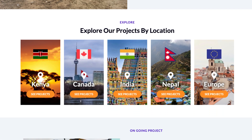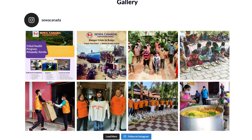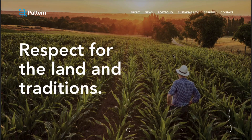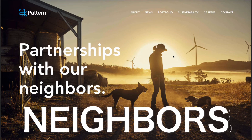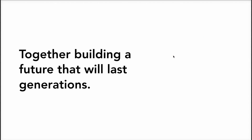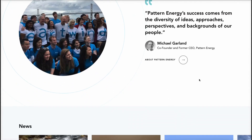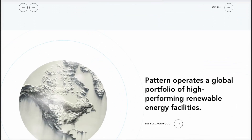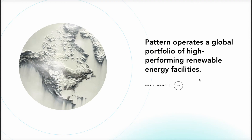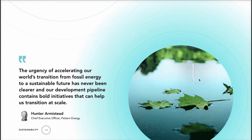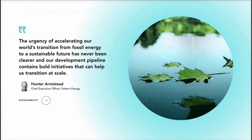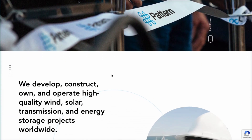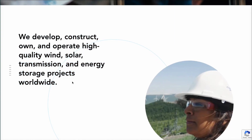You might think it's an obvious goal of a website to be easily understood, but let me show you an example of people who don't think like that. Tell me what this site is about. 'Respect the land and traditions' — that's not helpful. 'Partnerships with our neighborhoods' — still tells us nothing. 'Together building a future that will last generations' — useless. Then a quote, some news articles, and a testimonial that tells us nothing. Eventually, buried on the page: 'Pattern operates a global portfolio of high-performing renewable energy facilities.' They develop, construct, own, and operate high-quality wind, solar, transmission, and energy storage projects worldwide — too bad they left this on the About page and didn't put it on the Home page.